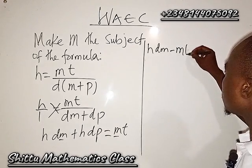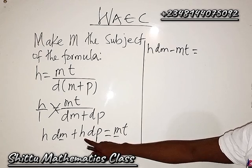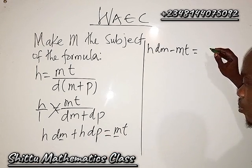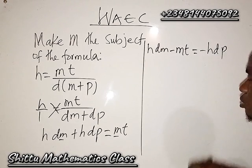Then we are going to send this to the other side so that we have m on one side, so it's going to be minus h·dp. Are you following?